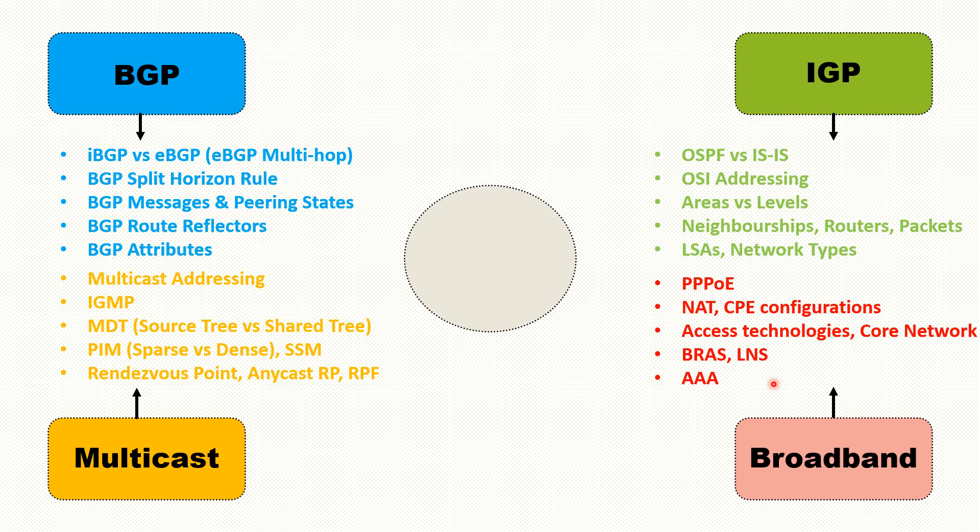You should prepare Triple-A services — Authentication, Authorization, and Accounting — and understand how these three services play their role in customer connectivity. You should know how the billing cycle is run on the Triple-A server, how authentication takes place, and how authorization works. Overall, if you know the end-to-end flow from a home customer through to the core, and the technologies and devices involved, you are well prepared for broadband connectivity questions.